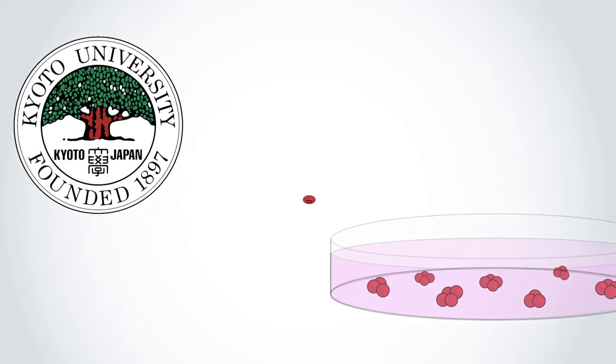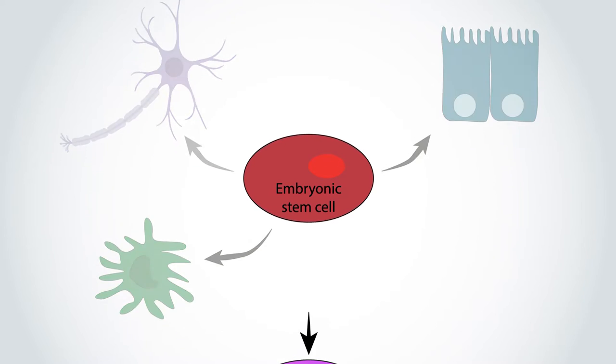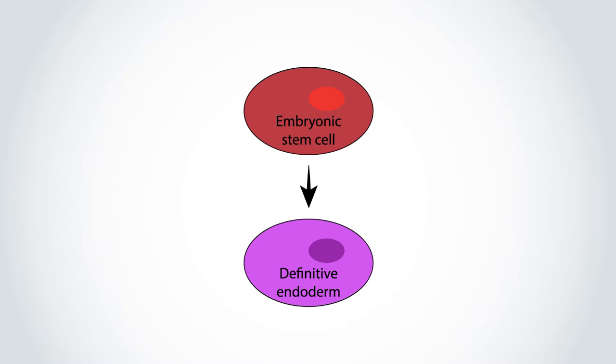The Japanese group began by searching for the best way to transform embryonic stem cells, cells with the potential to become any cell in the body, into definitive endoderm cells, or pancreatic precursors.